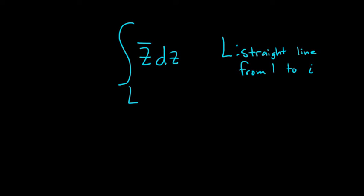We have a contour integral. We have to integrate the conjugate of z with respect to z over the contour l, where l is the straight line from 1 to i.